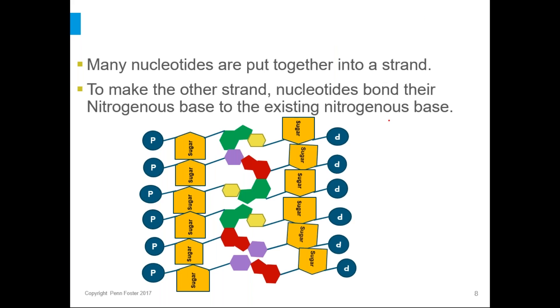So you get a sugar phosphate backbone on this side, nitrogenous bases bound together in the middle with hydrogen bonds, and then a sugar phosphate backbone on this side.